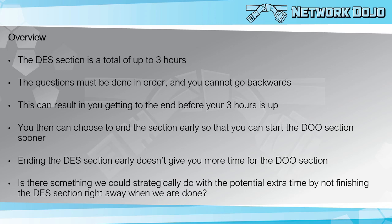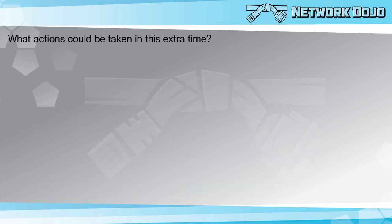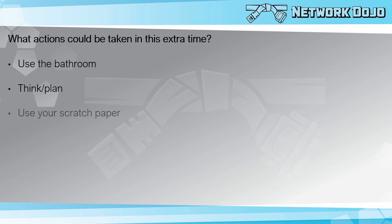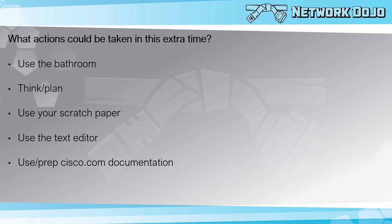Let's say you ripped through the design section and you're done in two hours — you have an entire hour left over. You can't take that extra hour and get a six-hour do section. You can end it early and still have your five-hour do section. But rather than just throw away that extra time, let's think through some things we might be able to do so that we can be more effective in the do section. High level: we can use the bathroom, do some thinking or planning, leverage the scratch paper, use the text editor on our lab PC, get some Cisco.com documentation open, and do some actions to control our body and emotions.